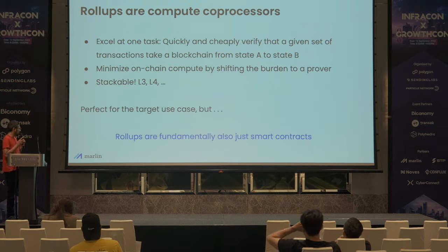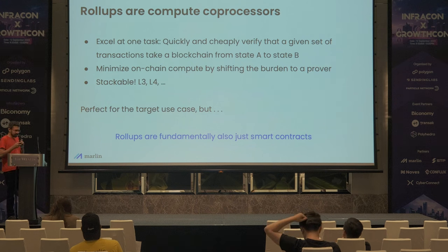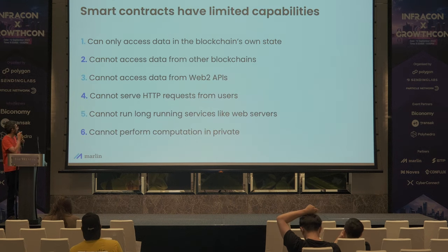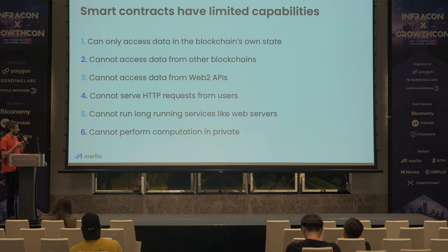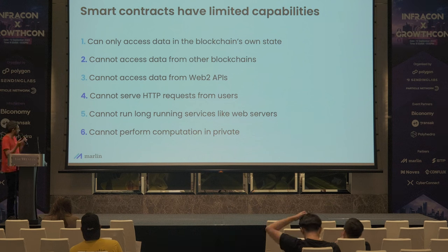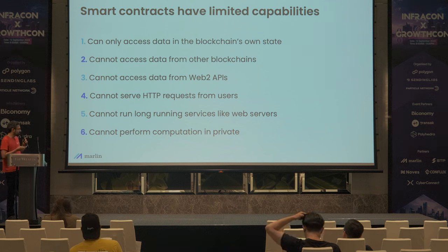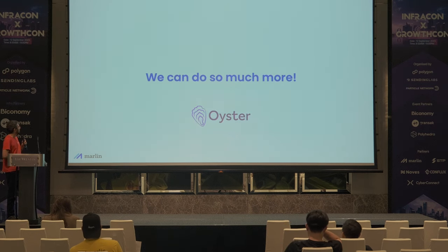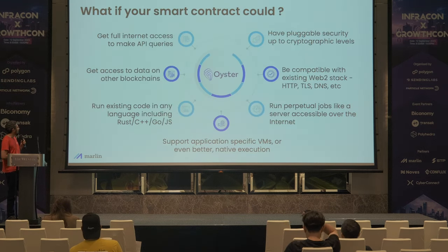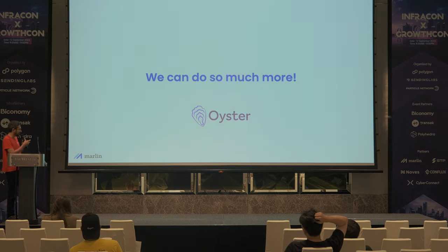But rollups still don't really work fully, because rollups are fundamentally also running as smart contracts, which means they are limited by the same limitations you have on chain. Which is: you don't have a lot of capabilities today. Like, you can only access data that's already on the blockchain. You can't really access data that's on other blockchains. You can't access data from your usual web APIs. You can't serve a request to users because you can't do anything long-running. Any transaction is quite small, with simple settings. And you can't even perform any computation privately, because most transactions are just public. So our goal is to do so much more than that. And that's why we are building our co-processor.